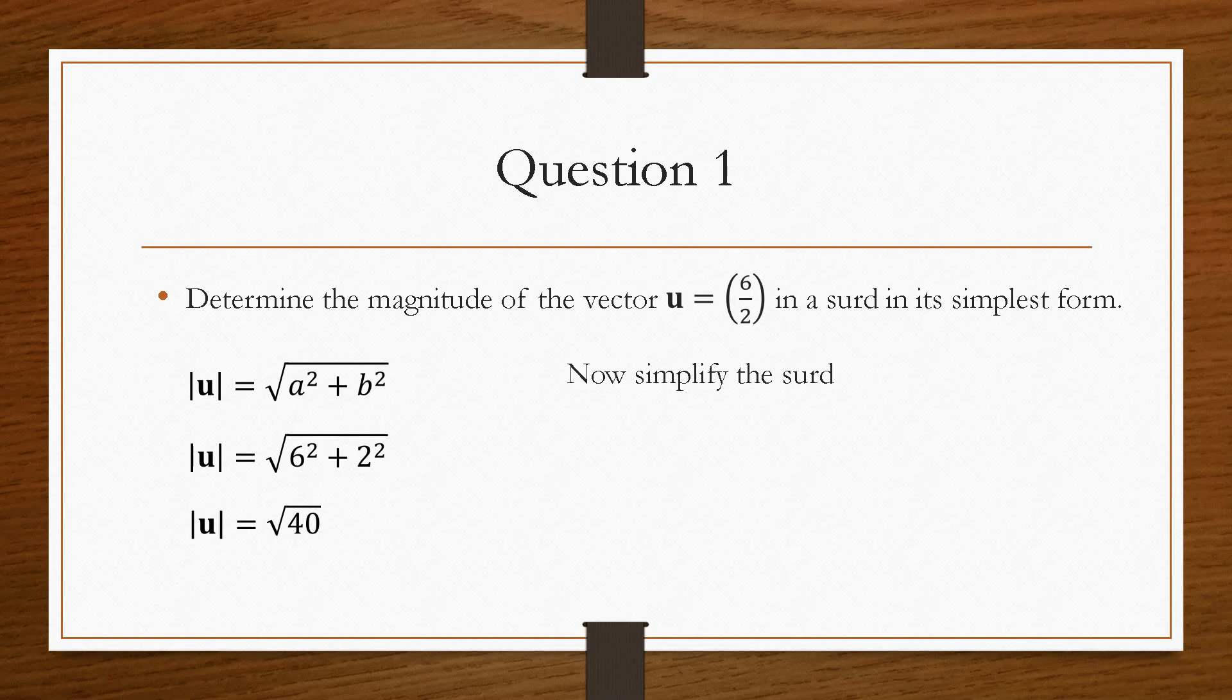Now because we're dealing with a surd, we need to try and get this as simple as possible, because it asks us in its simplest form. So we use the laws of surds, so we need two numbers that will multiply together to give us 40, one of which can have a complete square root.